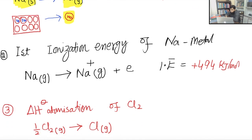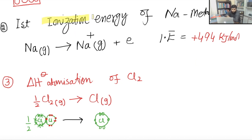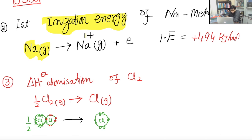The second term is ionization energy — the amount of energy required to remove an electron from the isolated gaseous state of an atom. First, the atom must be converted into the gaseous form, then energy is provided to remove the electron. For sodium, after removing one electron, it becomes Na⁺. The ionization energy for sodium is 494 kJ/mol.